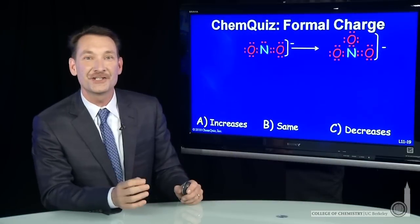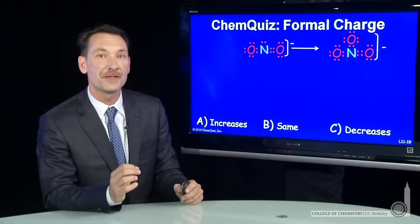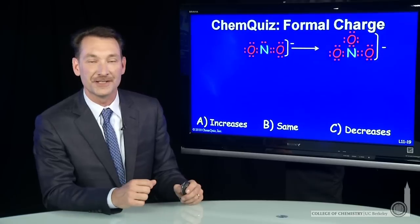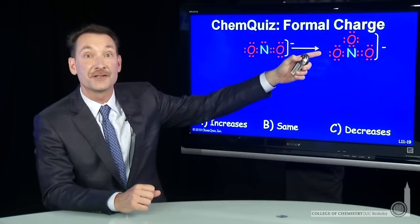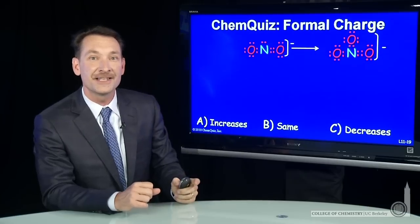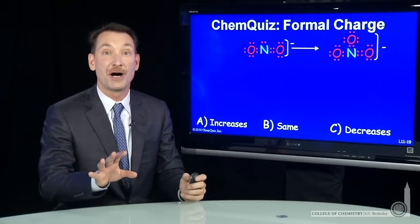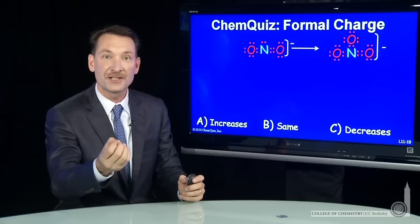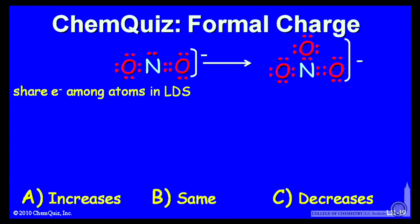We're looking at the oxidation of NO2 minus to NO3 minus and looking at how the formal charge on nitrogen changes in that process. So in order to determine formal charge, you look at your Lewis electron dot structures and you assign the electrons to the various atoms based on a sharing of the electrons in the bonds. Then you compare those electron assignments to the neutral atom to determine formal charge. We can do that.